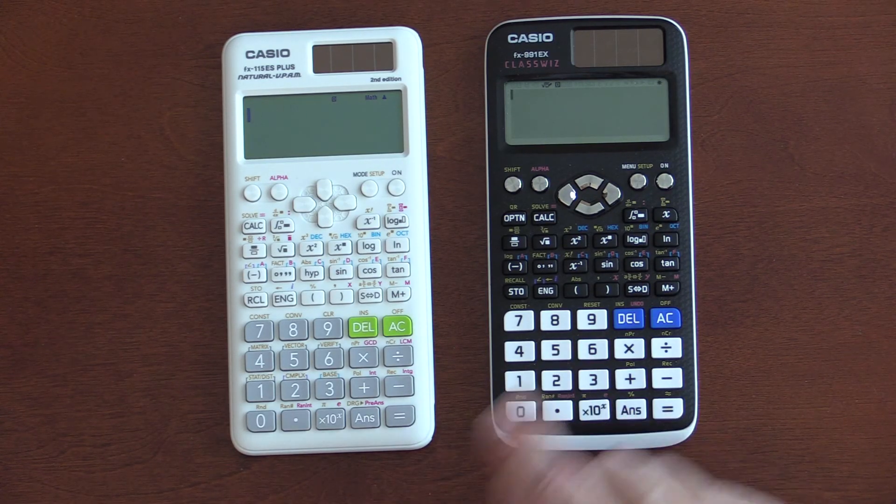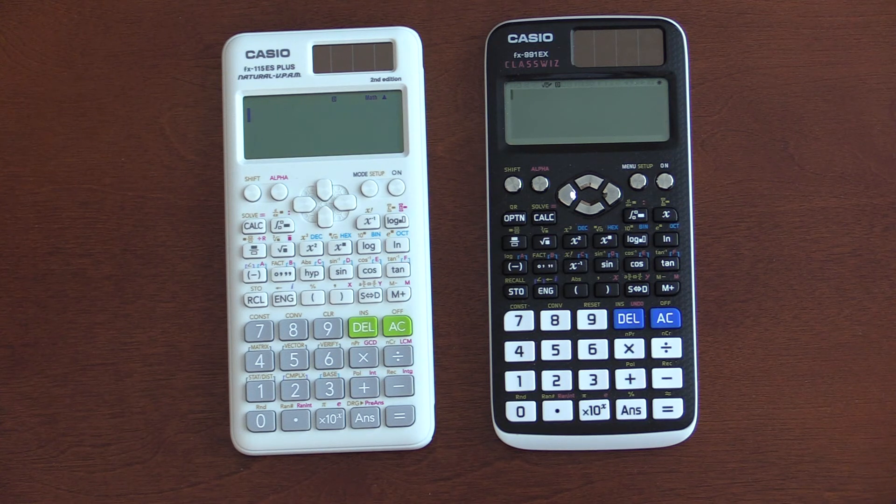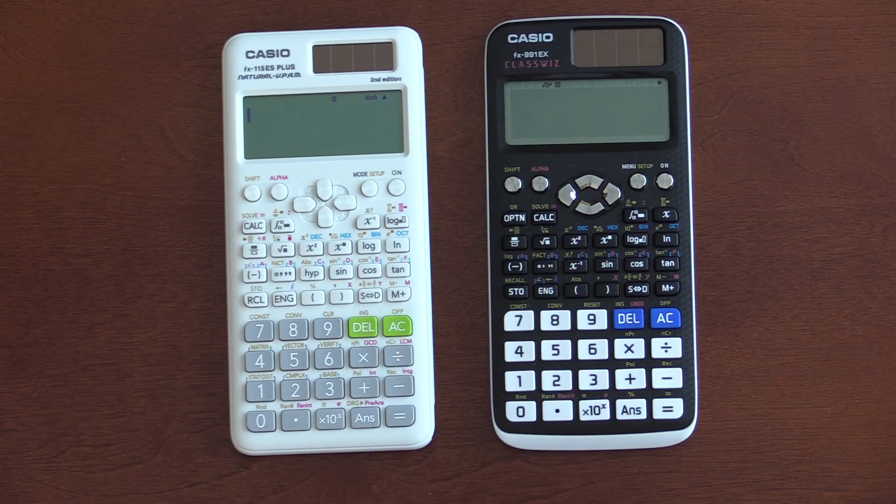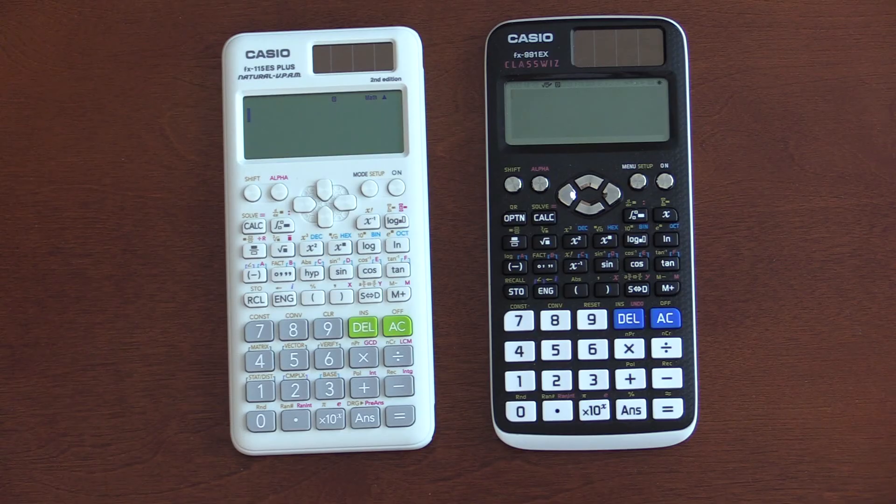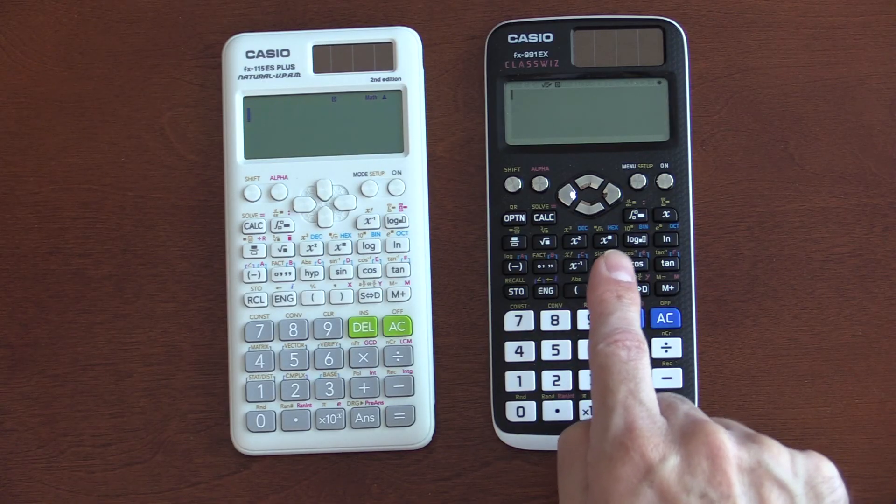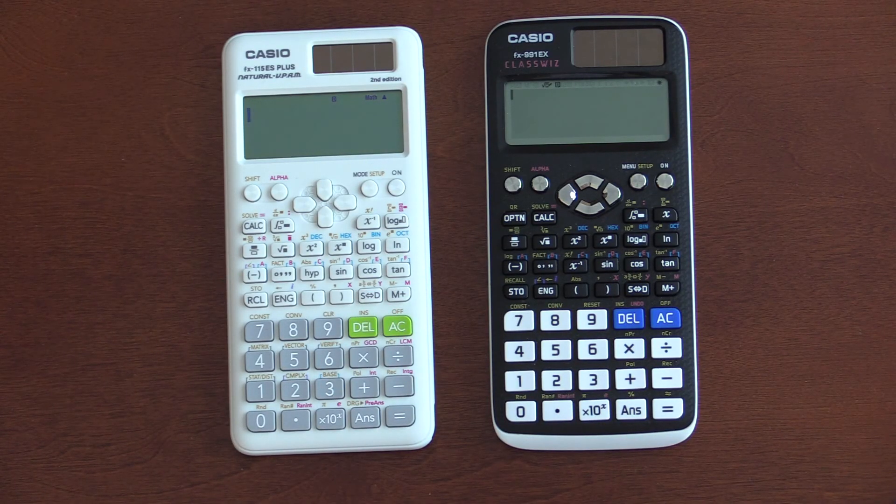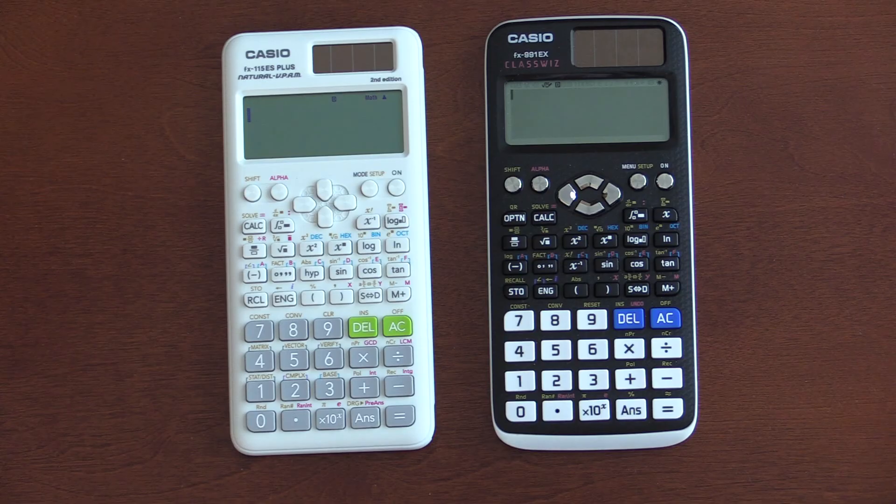Even though the EX is much, or significantly more powerful in terms of processor. The fact that they offer both of these is also puzzling to me. I'm not sure why they offer two calculators that are so similar, or why they would not have given the EX these extra features that the ES offers. That's confusing to me.